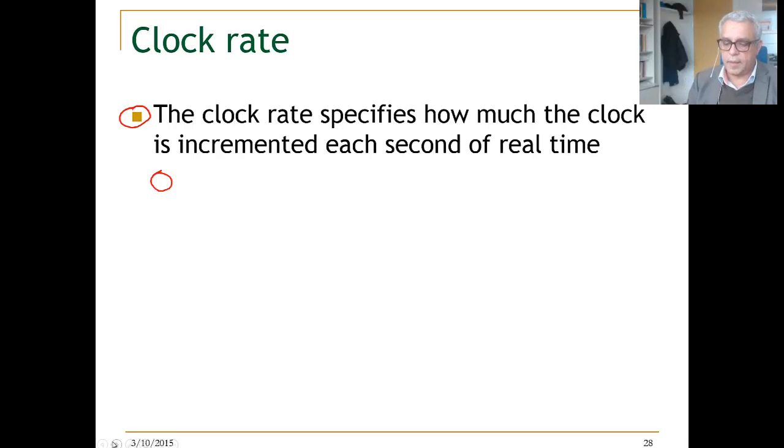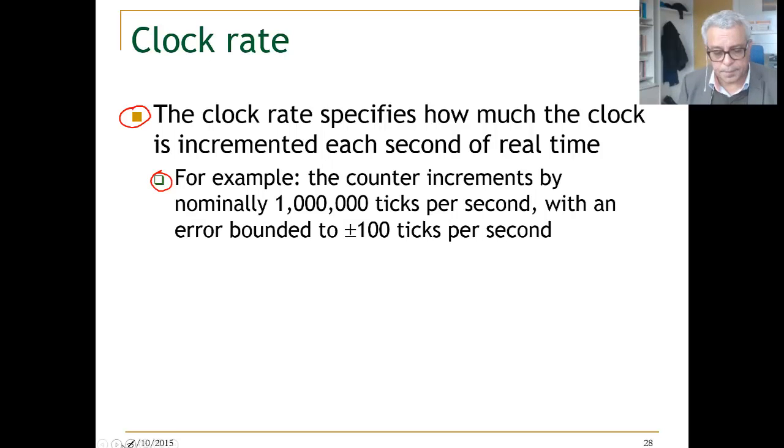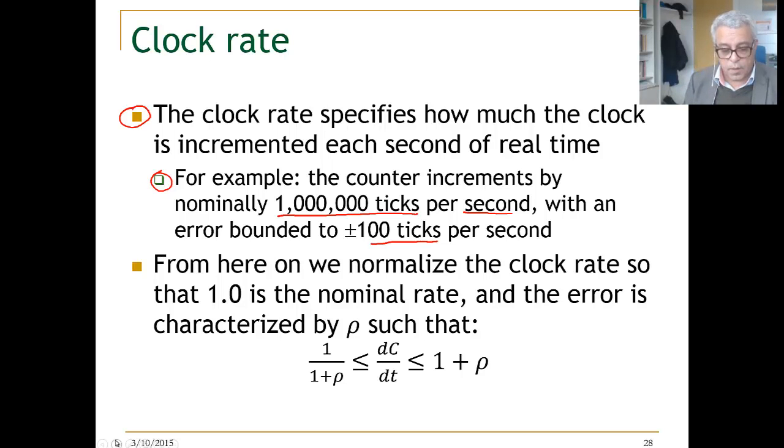The clock rate in fact specifies how much the clock is incremented each second of real time. For example, the counter increments by, this is normal, like 1 million ticks per second, but with some bounded error of plus or minus 100 ticks per second. And this is guaranteed by the manufacturer. From here on, we normalize the clock rate so that 1 will be the nominal rate, and the error is characterized by rho. And rho will be the drift within a unit time.